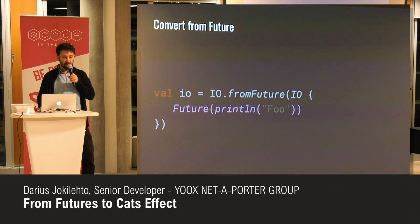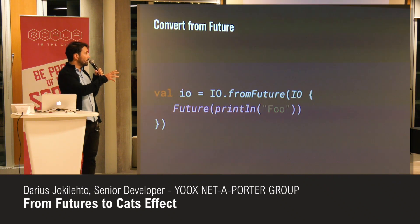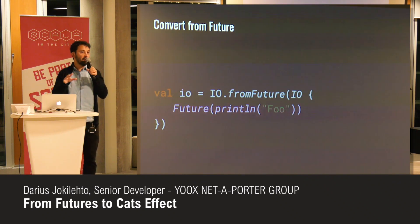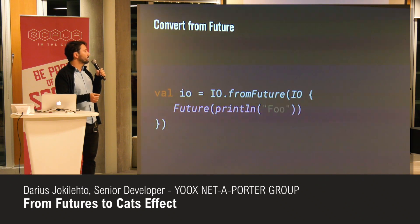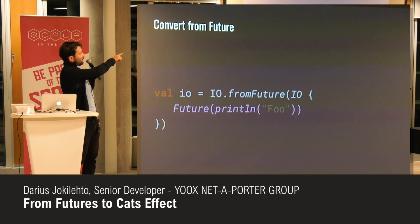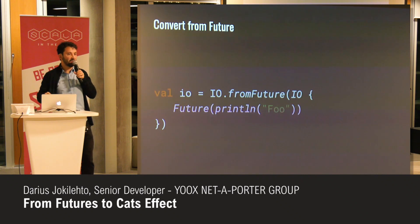How do you convert from a Future? This is quite useful when you have, say, a library that doesn't support IO but you can build an abstraction layer around that if you want an IO interface. The key thing to notice here is that the Future is wrapped inside an IO so that it doesn't get executed immediately, and then IO.fromFuture takes care of the rest — and you suddenly have an IO from a Future.